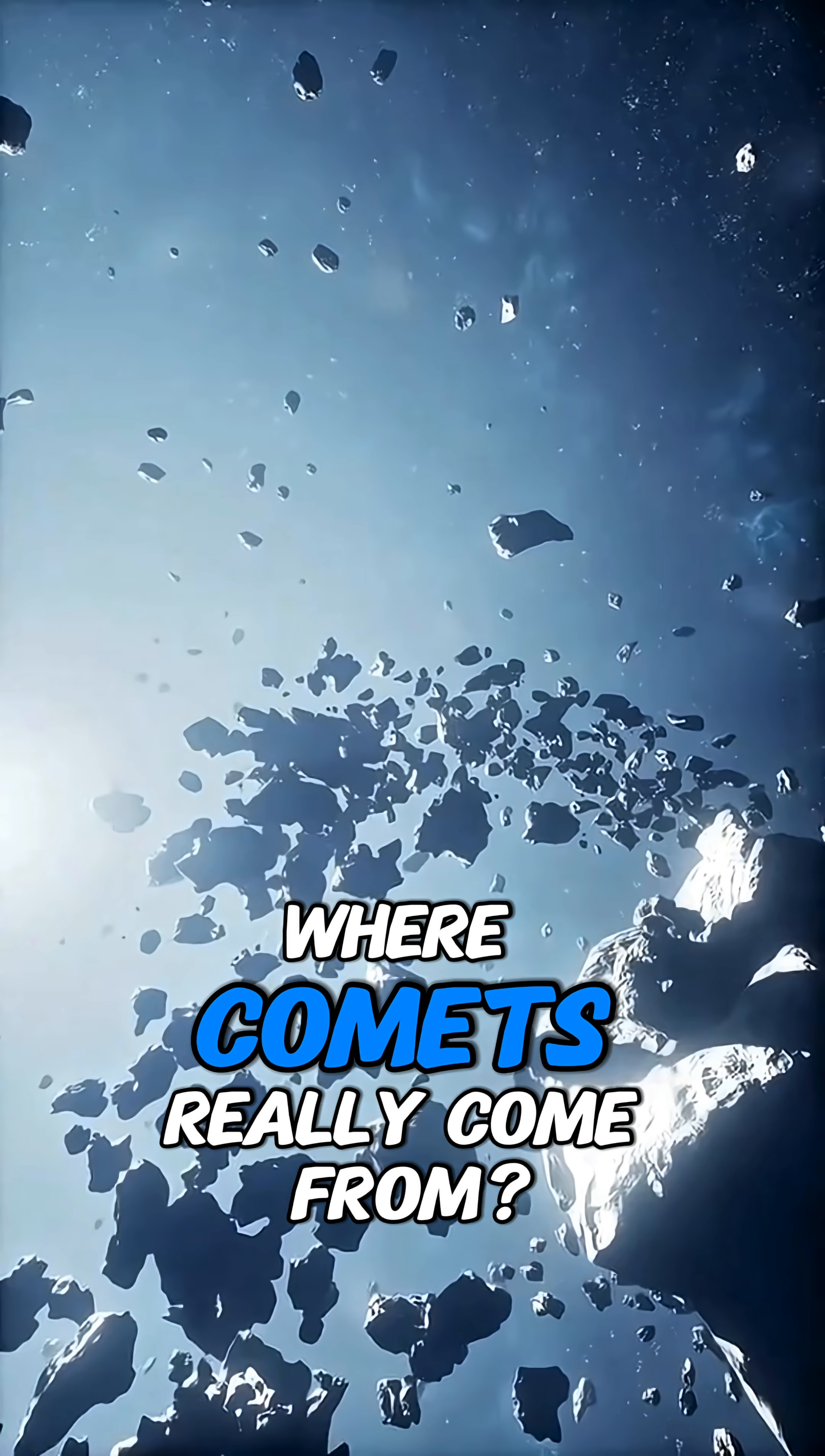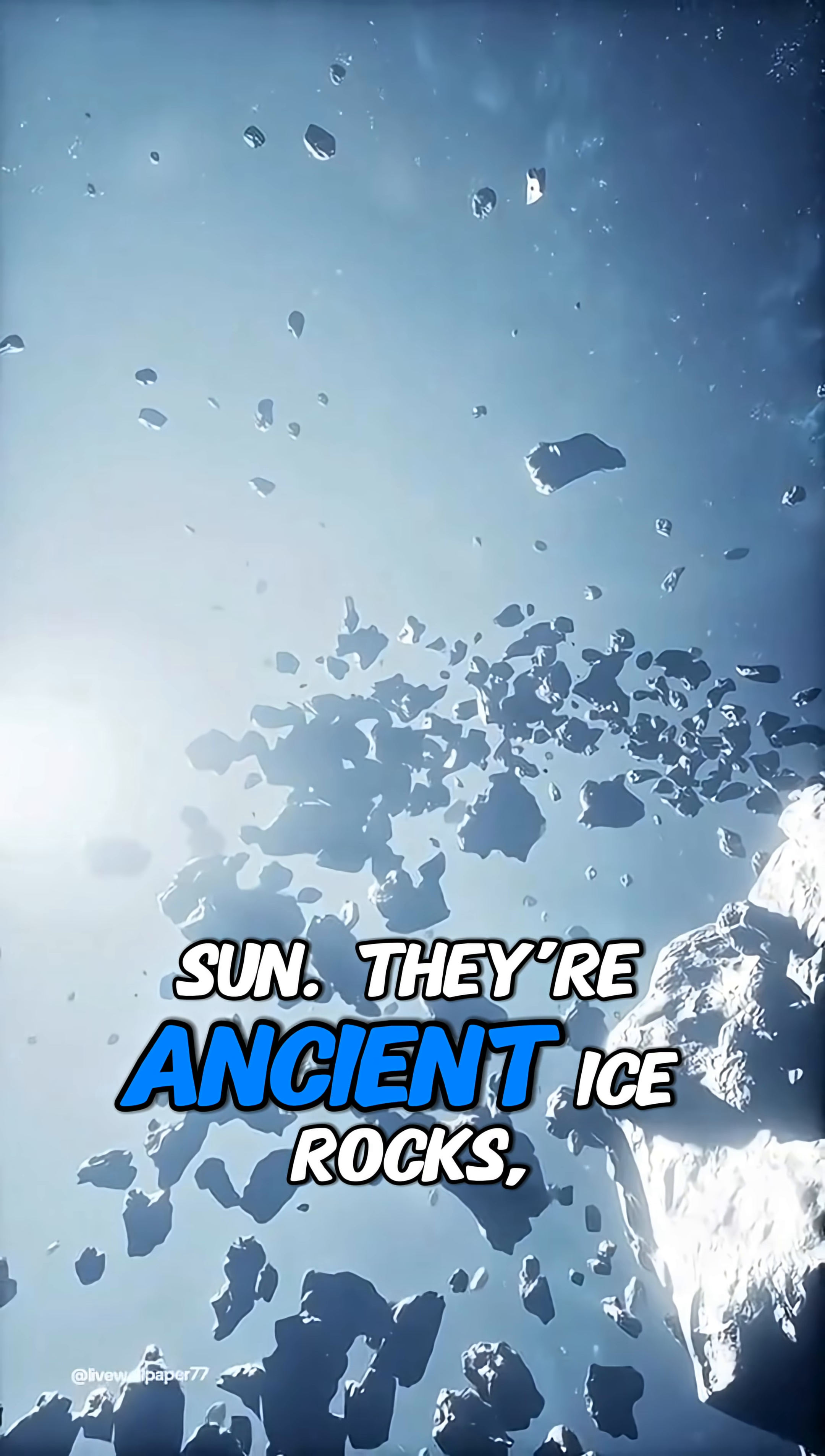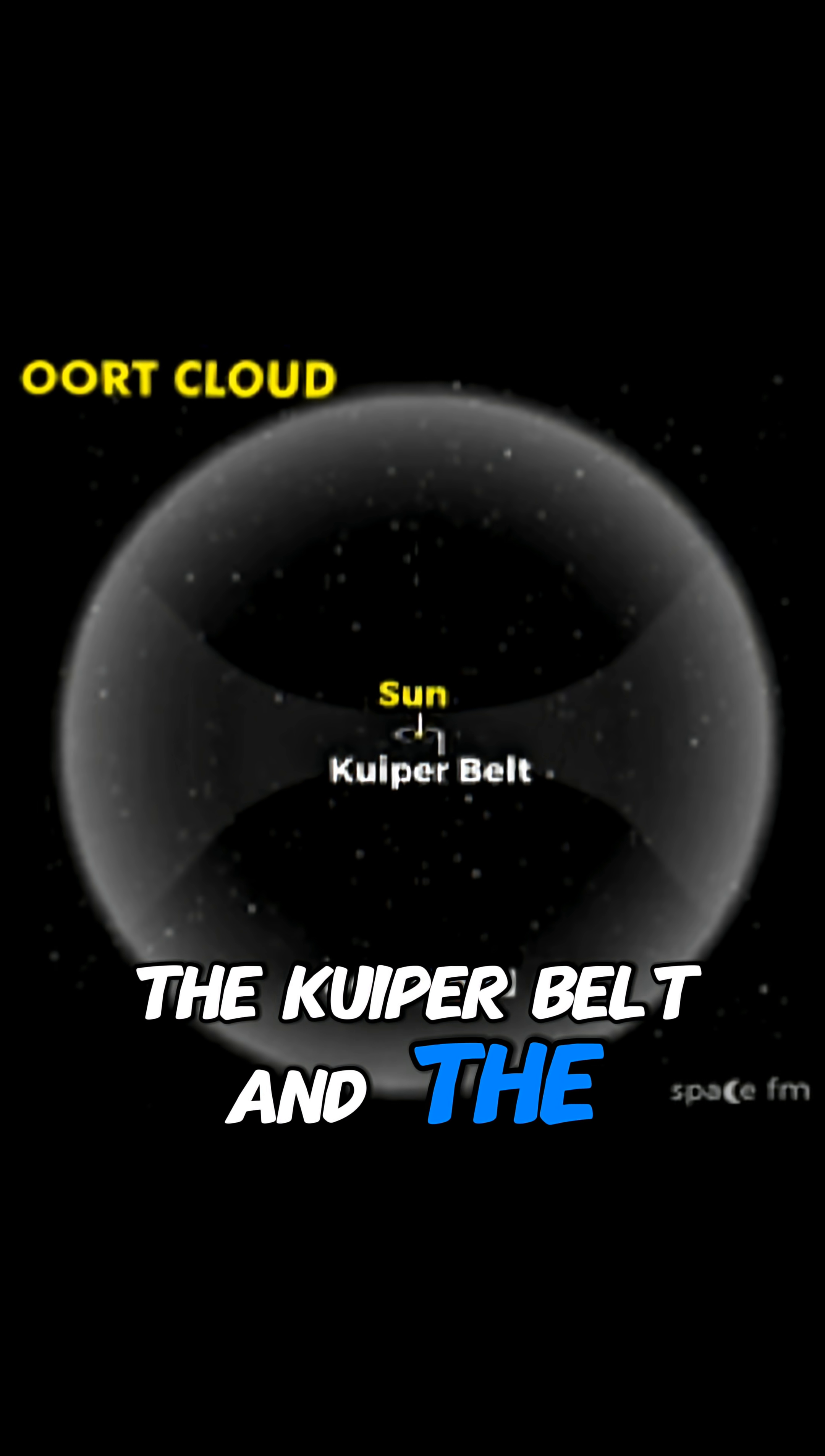Ever wondered where comets really come from? Comets aren't born near the Sun. They're ancient ice rocks, formed at the edge of the solar system, in the Kuiper belt and the distant Oort cloud.